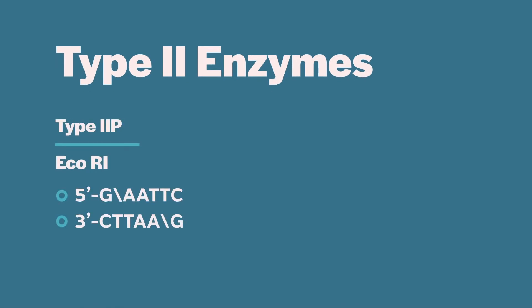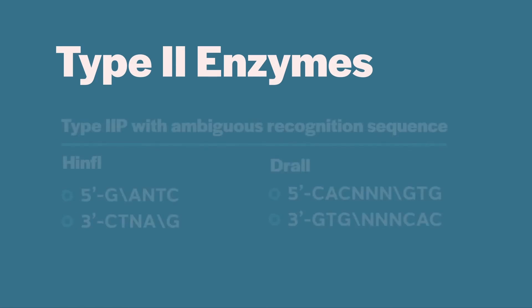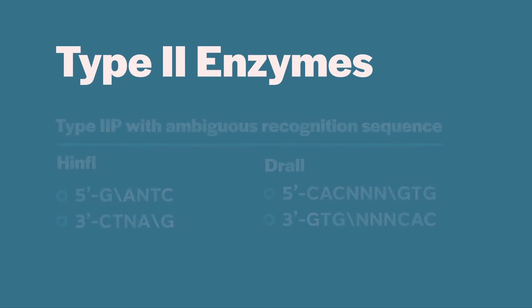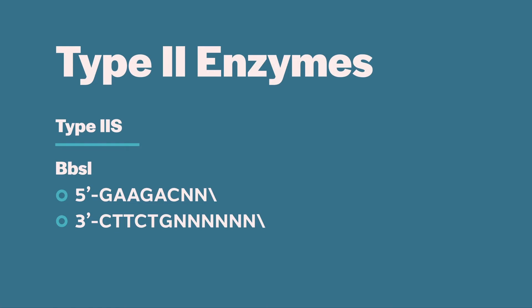Of these, a small number will tolerate up to four degenerate nucleotides in their recognition sites. Restriction enzymes like HinfI or DraIII with a degenerate base or bases in their recognition site are generally not useful for cloning. Another subset of type II restriction enzymes is known as type IIS restriction enzymes. There are two important differences between type IIP and type IIS enzymes: type IIS do not have palindromic recognition sites, and the cleavage site is outside of the recognition site at a set distance.